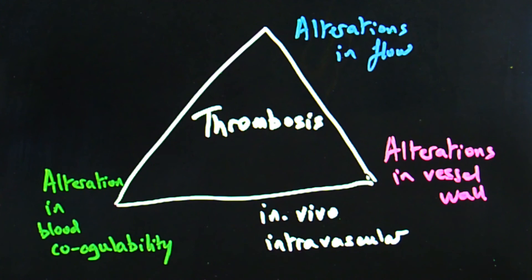Alterations in blood coagulability include things such as simply dehydration, and also more rare conditions such as hyperglobulinemias.